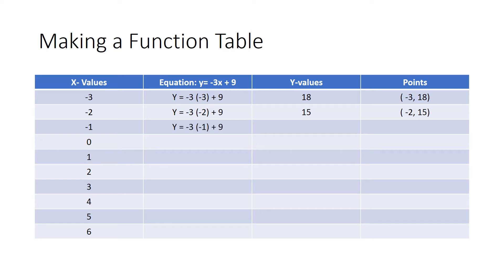For the third row I plug in the x value negative one, so the equation becomes negative three times negative one plus nine. I type the entire equation into the calculator and get an answer of 12. I label my x value and y value in the points column as negative one, 12.